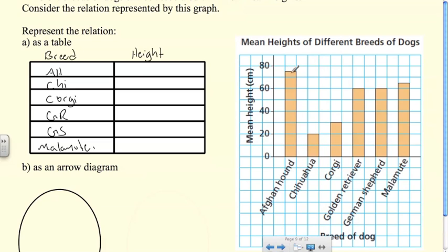Now I need to associate those with the heights. Afghan hound has a height of—remember that even though we're jumping by 20 centimeters, between 70 and 80, this is going to be 75 centimeters. Chihuahua is 20, Corgi is 30, Golden Retriever is 60, German Shepherd is 60, and Malamute is 65.